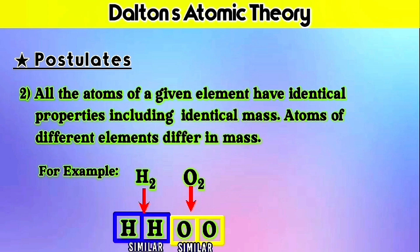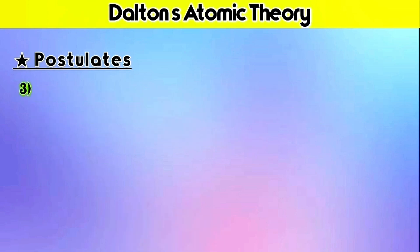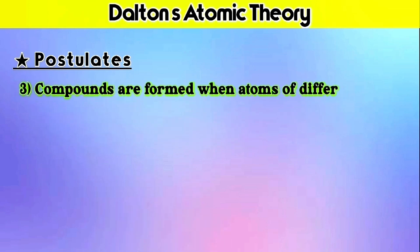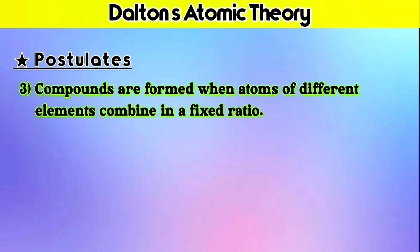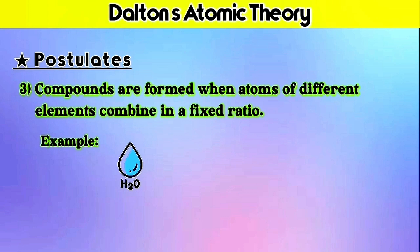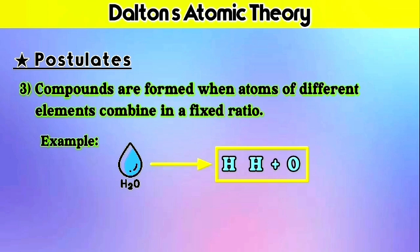The third postulate is: compounds are formed when atoms of different elements combine in a fixed ratio. It means that any particular compound is formed when atoms of two or more different types of elements combine in a fixed or particular ratio. For example, take H2O — water. In this compound, there is a combination of two atoms of hydrogen with one atom of oxygen, and by this ratio of combination, both elements together form H2O.